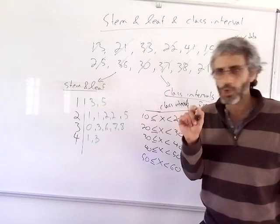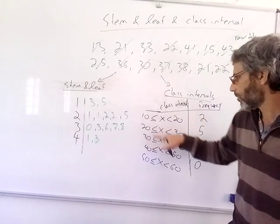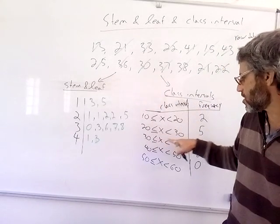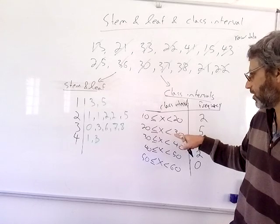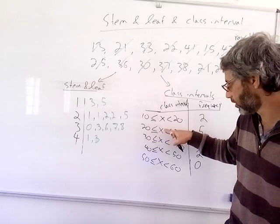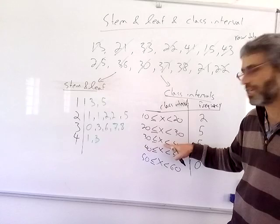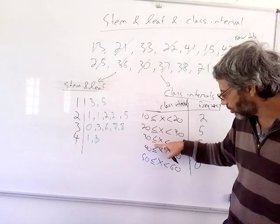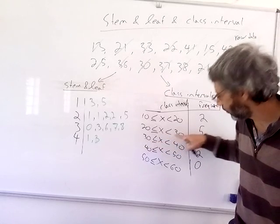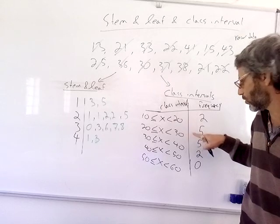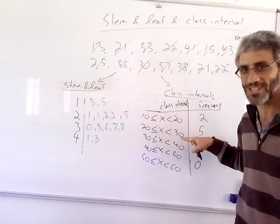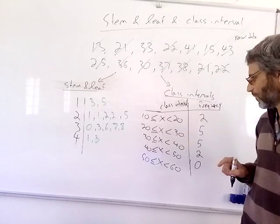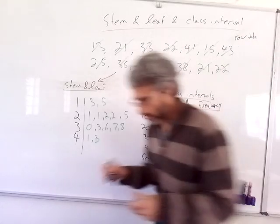So the only thing that can go wrong here is when you have something like a 30, and you need to decide where is the 30 going to belong to. Is it going to belong to this one, or is it going to belong to that one? And because I've got the equal sign here, and here is smaller than 30, it doesn't belong to that group, because 30 is not smaller than 30. 30 is equal to 30, so it belongs to this one. Hopefully that makes sense. Thanks, I'll pause here.